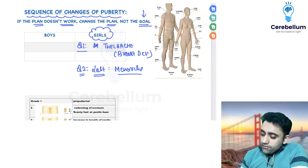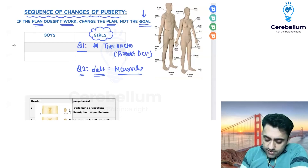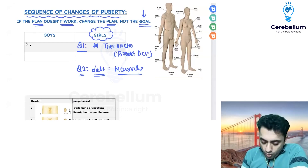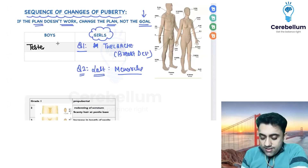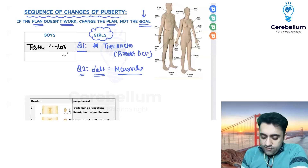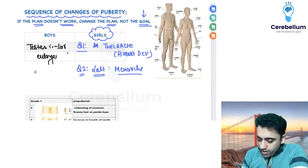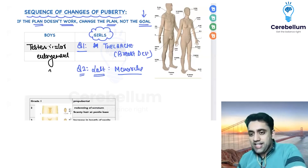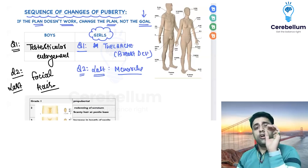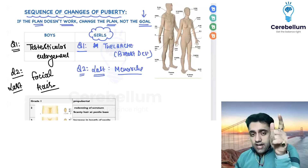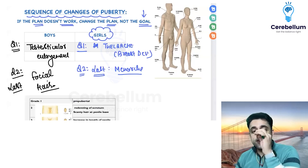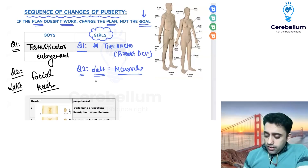As far as boys are concerned, which is the first visible sign of change of puberty in a boy? In boys it is from bottom to top, and that is testicular enlargement. Which is the last visible sign of change of puberty in a boy? Facial hair. So four MCQs are done: in girls, first is thelarche, last is menarche; in boys, first is testicular enlargement, last is facial hair.